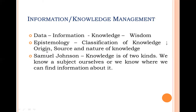There is a study called epistemology, which talks about the classification of knowledge — a special field that addresses the origin, source, and nature of knowledge. I recall the quote by Samuel Johnson, who said that knowledge is of two kinds: either we know something when someone asks for information, or we know where we can find information about it. That is basically the role of a librarian — to give readers what they want or tell them where to find it.